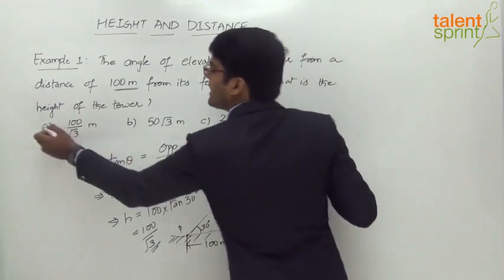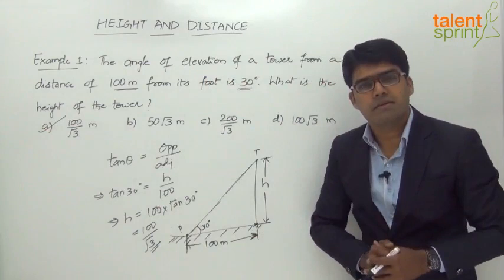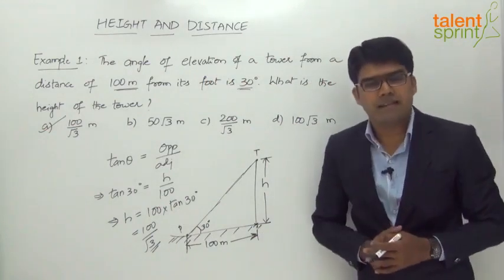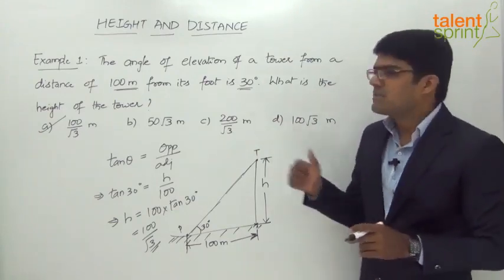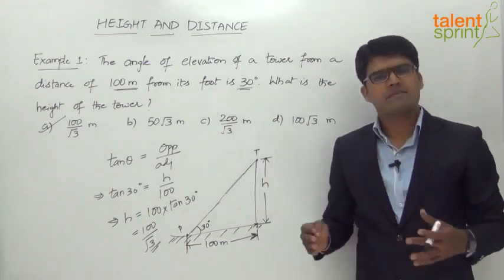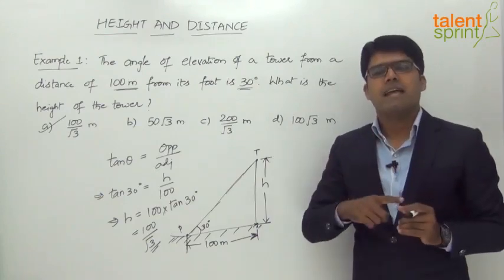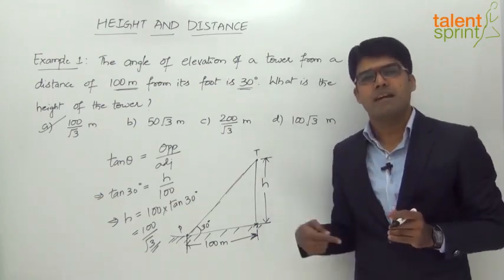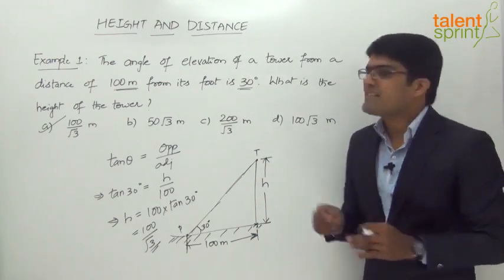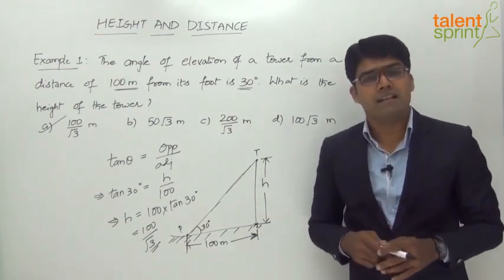The height of the tower is 100/√3 meters, which is option A. That's a very simple one to start with — just use the trigonometric ratio tan θ to get the required answer. After solving a few questions of this type, you will be able to mark the answer without drawing the diagram. Simply visualize: height h, distance 100, theta 30°, so tan 30° = 1/√3, giving h = 100/√3. Try to cut down the number of steps to arrive at the final answer much faster.